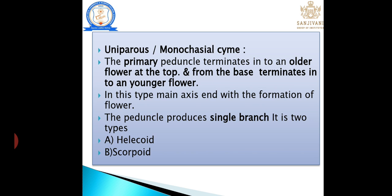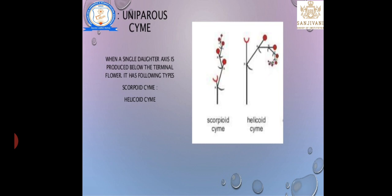Uniparous (uni = single): the primary peduncle terminates into an older flower at the top, and from the base of it a new flower is produced — that means the pedicel produces another flower. Classified into helicoid and scorpioid. In helicoid, flowers are produced only in one direction; in scorpioid, flowers are produced in a zigzag manner.